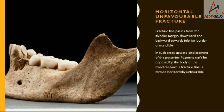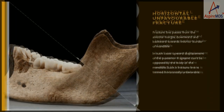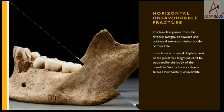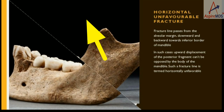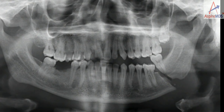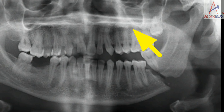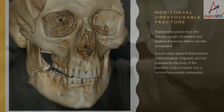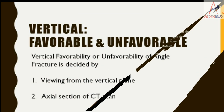In a horizontally unfavorable fracture, the fracture line passes posteriorly and inferiorly such that muscle pull can cause displacement of the proximal fragment. The masseter pull causes displacement, leading to an unfavorable fracture, as seen in this OPG. This is also demonstrated in the 3D CT where the proximal fragment is displaced.